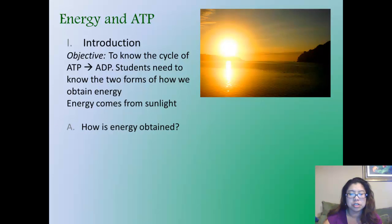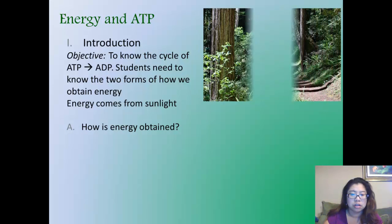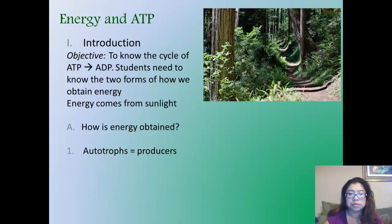So how is energy obtained? How are we going to harness the energy from the sun? There are autotrophs, which are usually being named producers. Most recognizably, they are the ones that have green. You think of the sun, you think of photosynthesis.